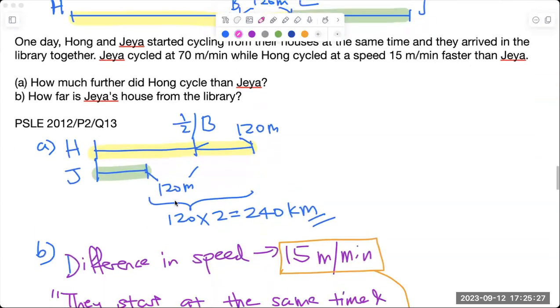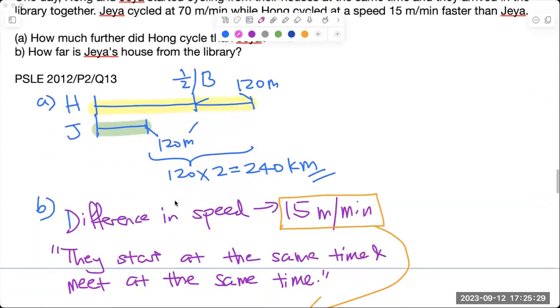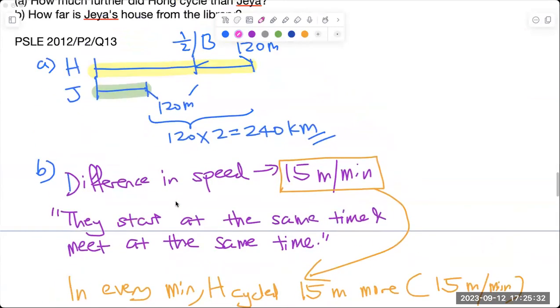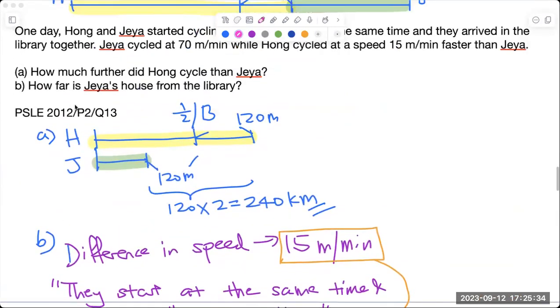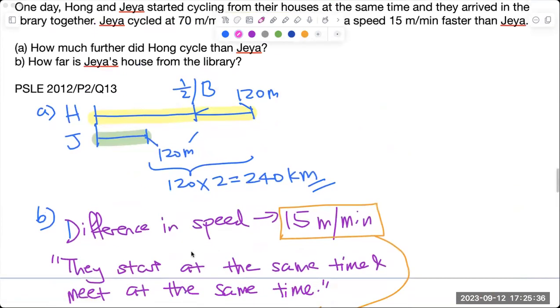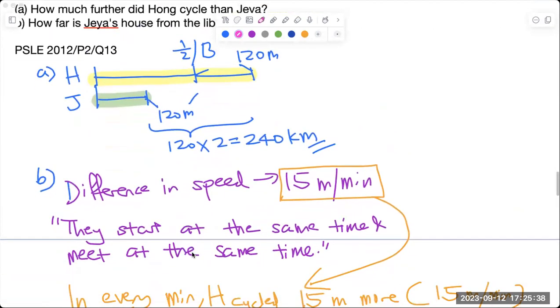So that's 240 kilometers for answer A. For answer B, how far is Jaya's house from the library? Right now in this case, it's a question of catching up.